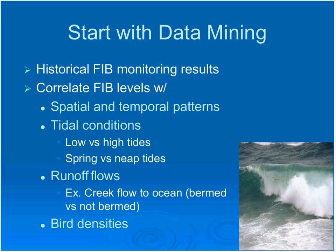Are you seeing higher counts during low versus high tides? Are you getting a higher frequency of exceedances during spring versus neap tides? Spring tides — which have nothing to do with the season — occur when the combined gravitational pull from the sun and the moon makes high tides higher and low tides lower during full and new moon phases. During spring tide events, you get a higher volume of water flowing inland, which can resuspend and transport bacteria entrained in sediments into water bodies.